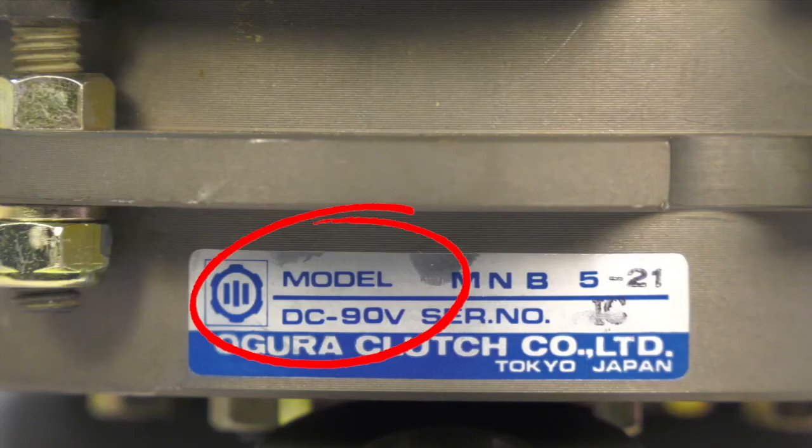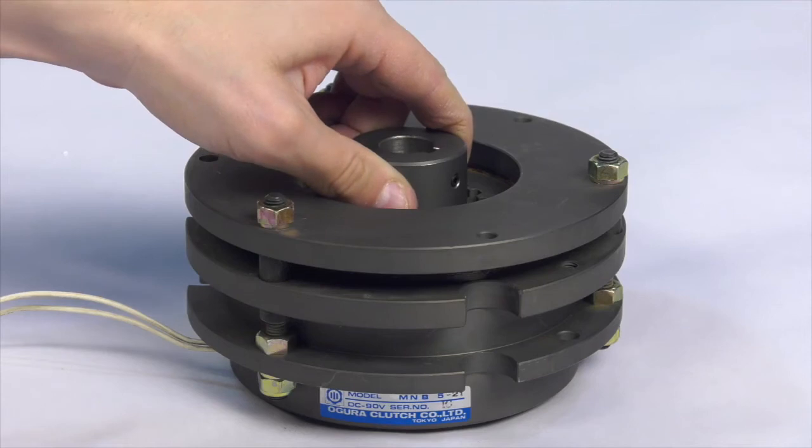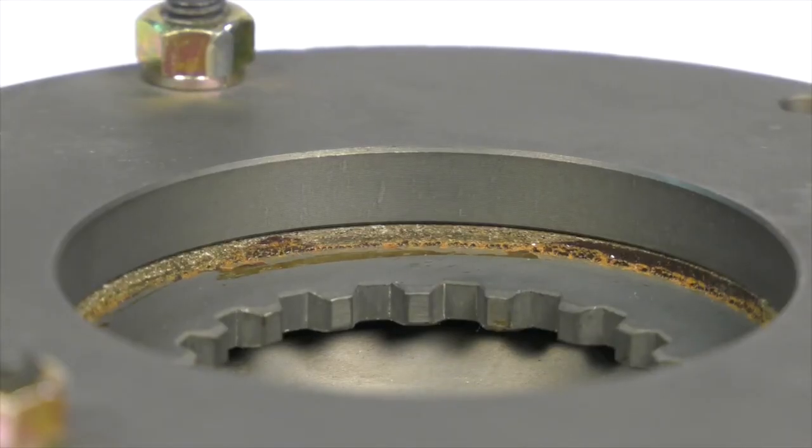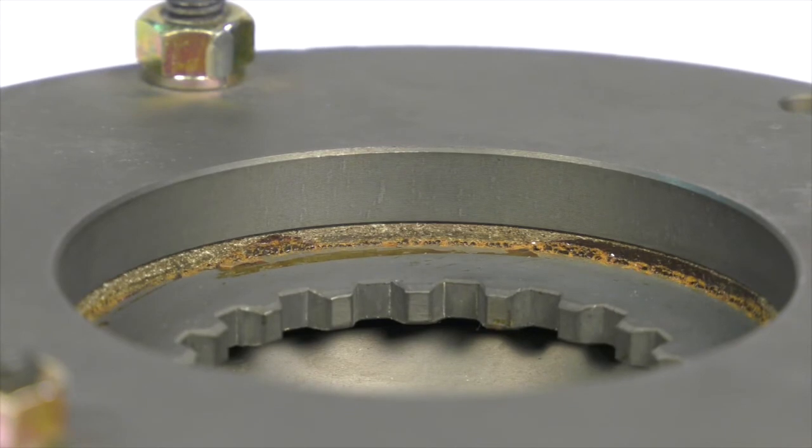So to reposition the friction disc, temporarily energize the brake coil at the rated voltage shown on the label and then slide the hub into the friction disc, which can be a spline or square depending upon brake model.